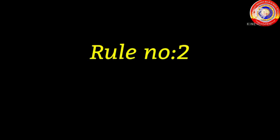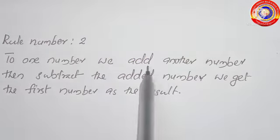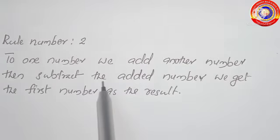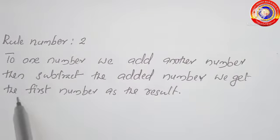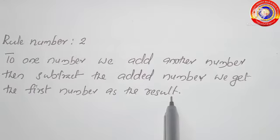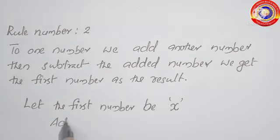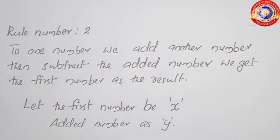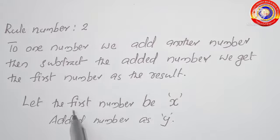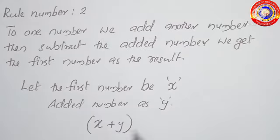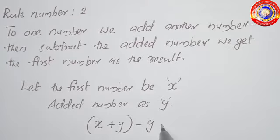Rule number 2: to one number we add another number, then subtract the added number — we get the first number as the result. Let the first number be x and the added number be y. Then we can write the statement as x plus y minus y, where we subtract the added number from the sum.